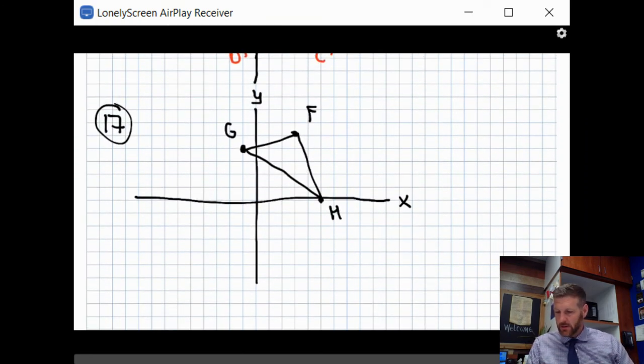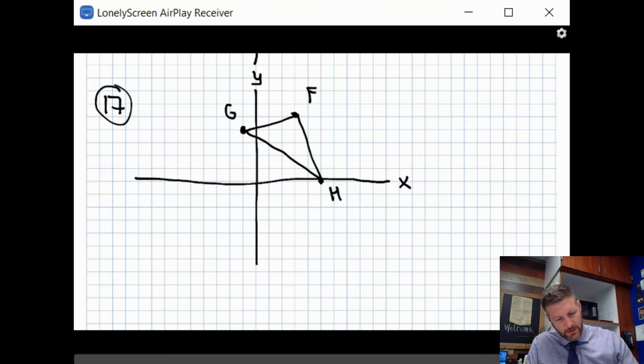Last example I'm going to do with you is number 17, where it's given us the points of F, G, and H. Then it says draw triangle F, G, H and its reflection across the Y axis. What that means is a reflection: every point is the same distance from the line. Be careful. It's not going to look like this because that wouldn't be across the Y axis. That would be across this line right here. Sometimes it can seem simple, but we're not quite seeing it right.